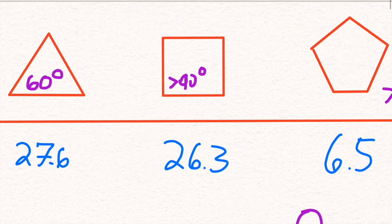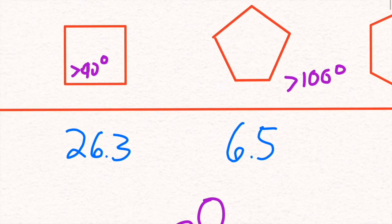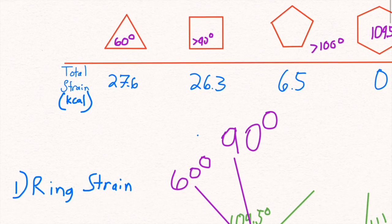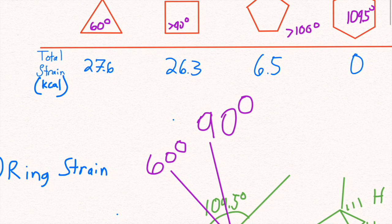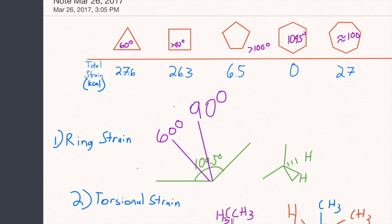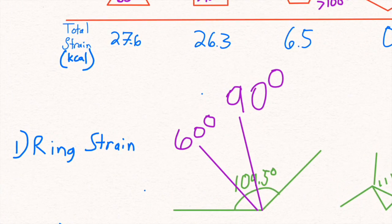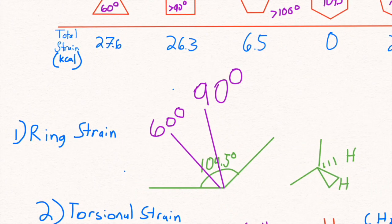We then have cyclobutane and so on and so forth. Now the two things that alter their stability so much from one ring to the other is ring strain and torsional strain. Ring strain we can define by the difference between the ideal angle, which is 109.5 degrees, and the actual angle, which is different for each of these molecules.